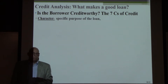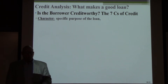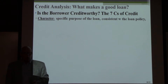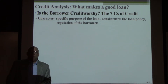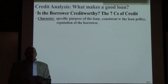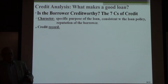Is the borrower credit worthy? The seven C's of credit. First, character. What is the specific purpose of the loan? Make sure there's a legitimate purpose, and that the purpose of the loan is consistent with the loan policy of the bank. Make sure the borrower has a good reputation. As a lender, you want to do your due diligence — you don't want to look bad if a loan goes bad. Look at the credit record of the borrower.